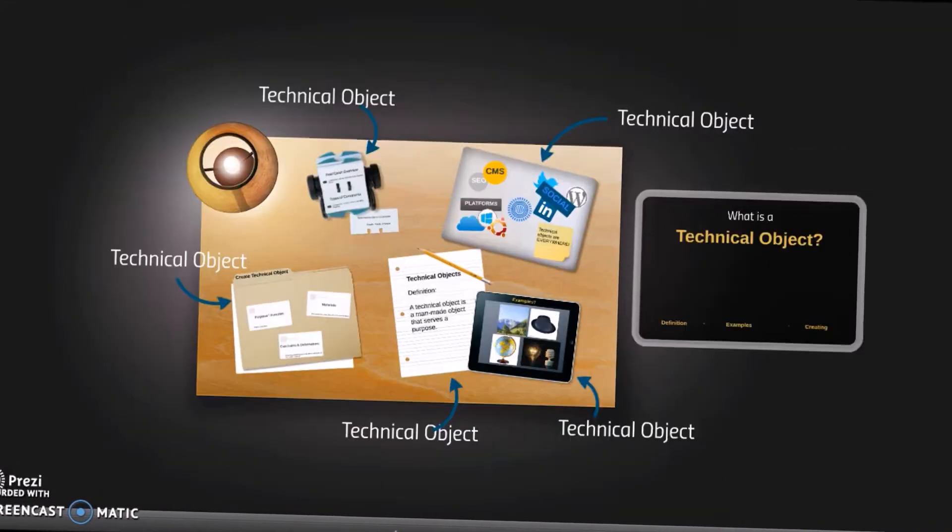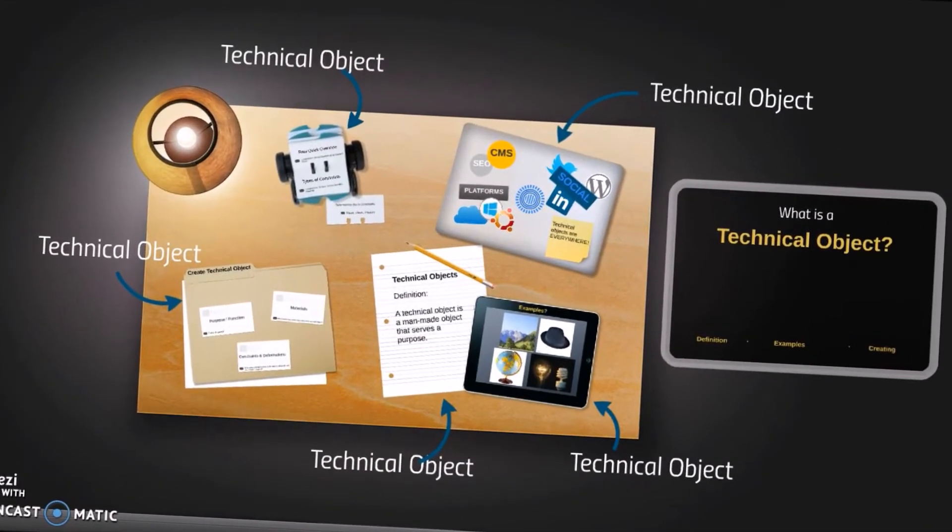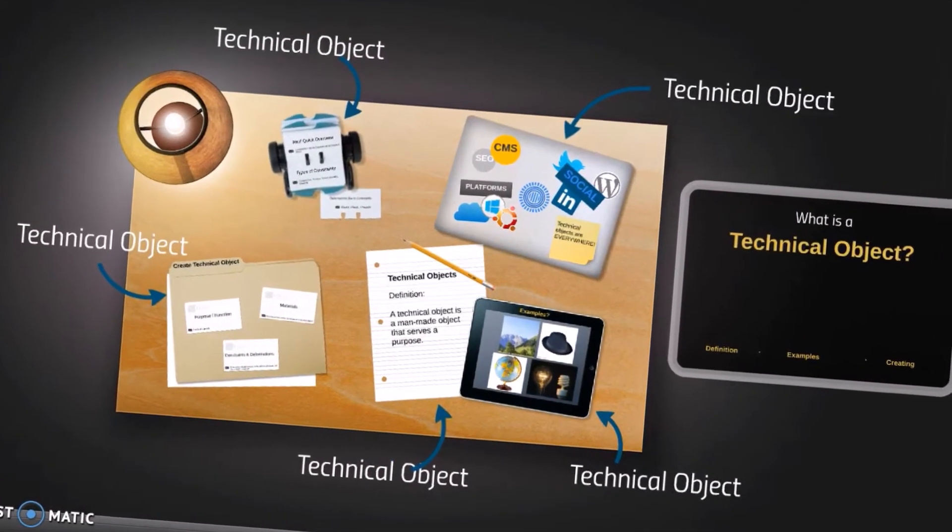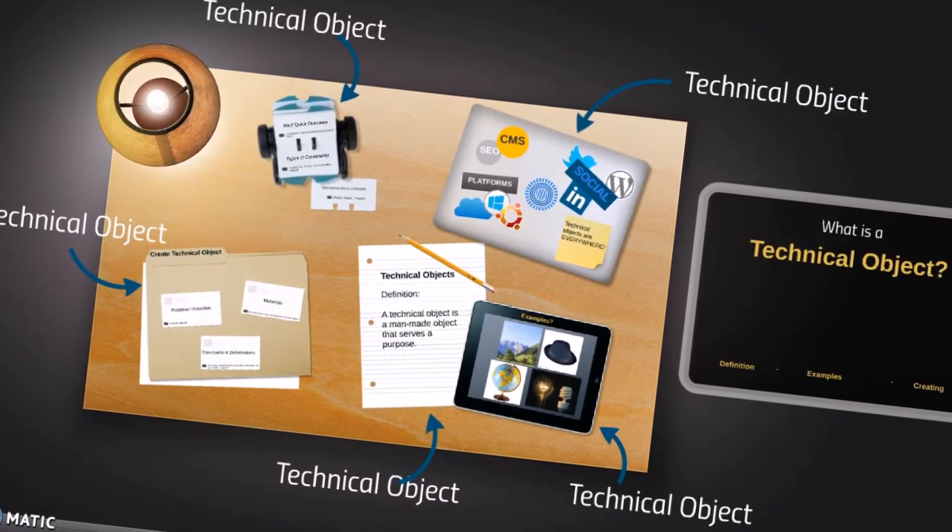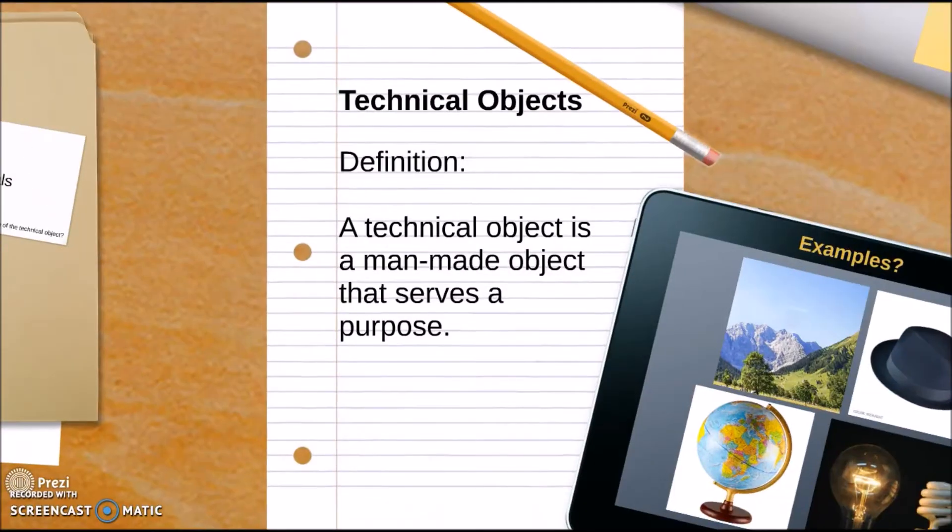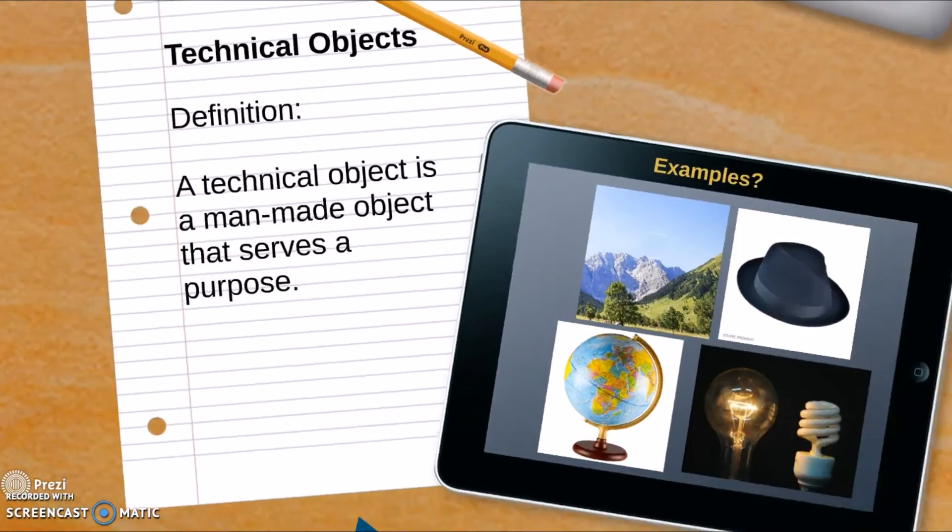So what did all those objects with arrows pointing at them have in common? They're not necessarily in the same category of anything except that, well let's see, they're all made by humans. And that's exactly the definition of a technical object. It's simple. It's a man-made object that serves a specific purpose or function.